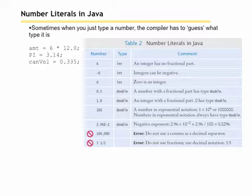Literal is the word that we use when something's not going to change. So if we have amt equals 6 times 12.0, 6 and 12.0 are both examples of numeric literals. Pi equals 3.14, that 3.14 is an example of a numeric literal. Canvol equals 0.335, 0.335 is an example of a numeric literal. We can use numeric literals, but sometimes we choose not to because it's not very descriptive.